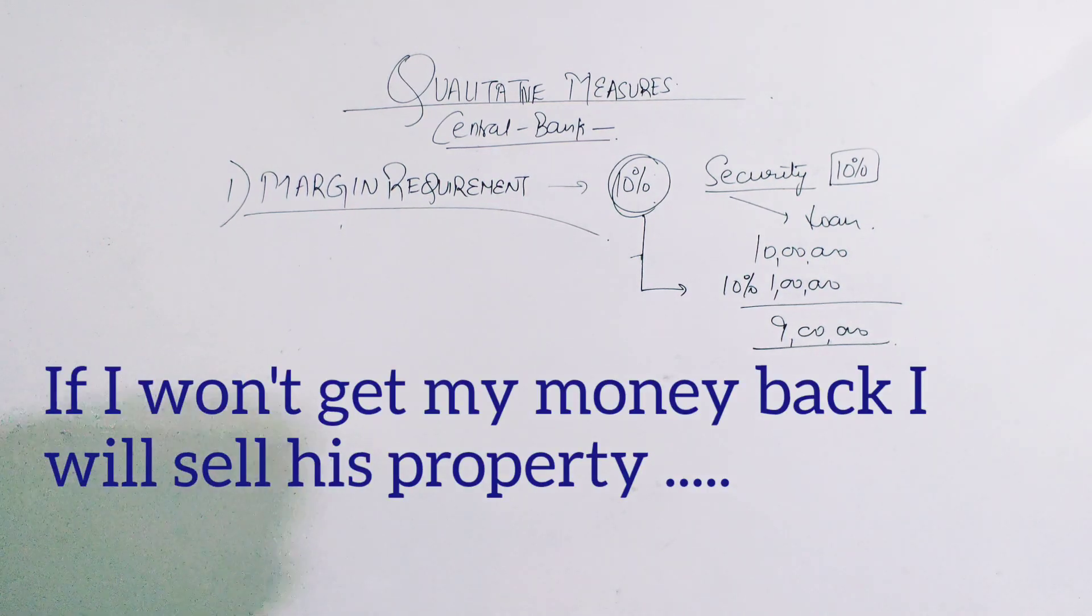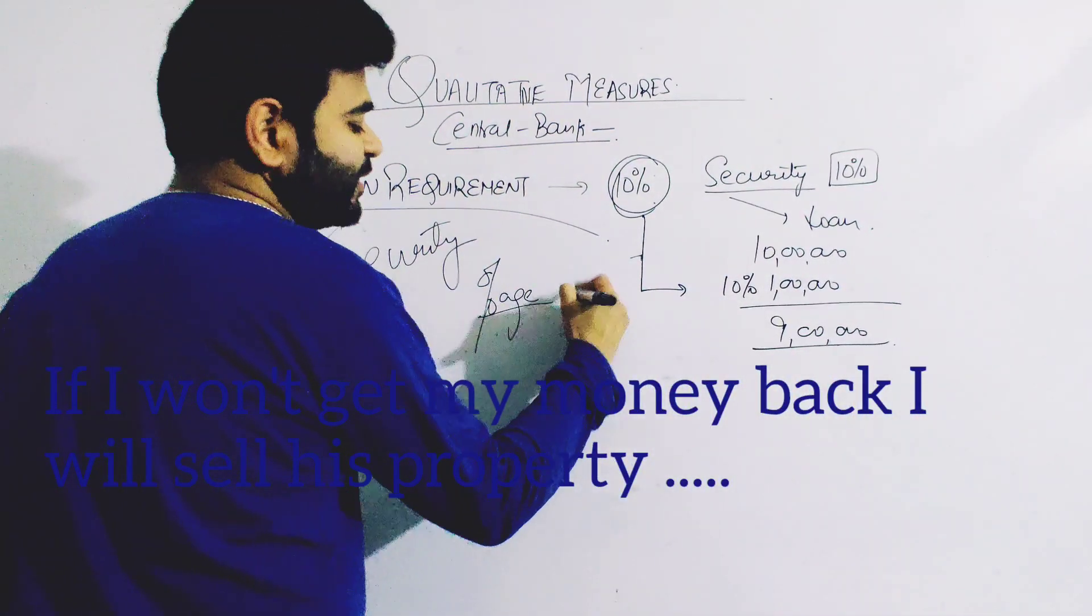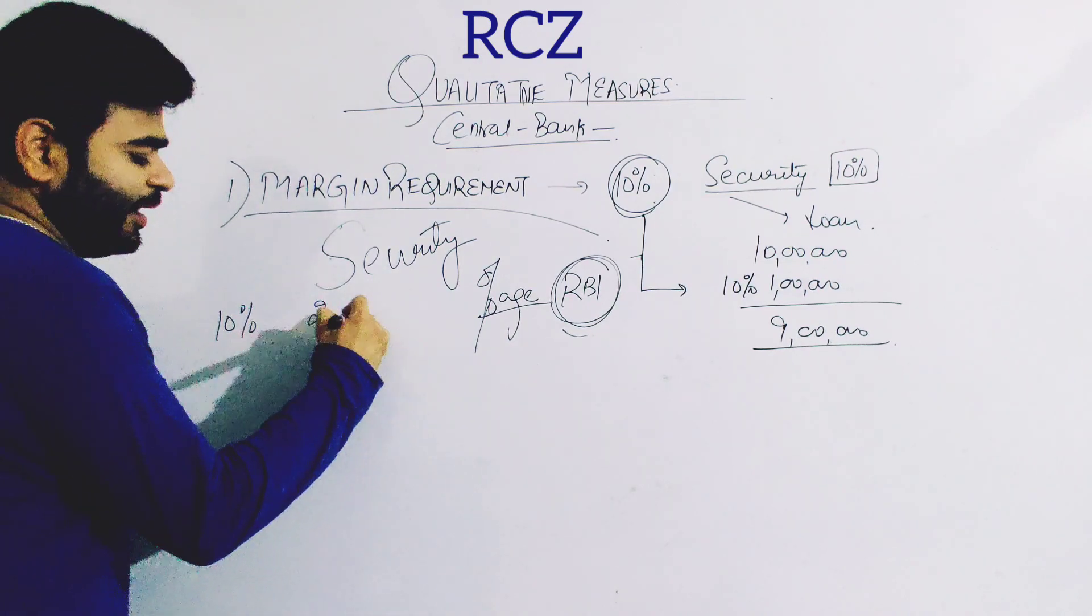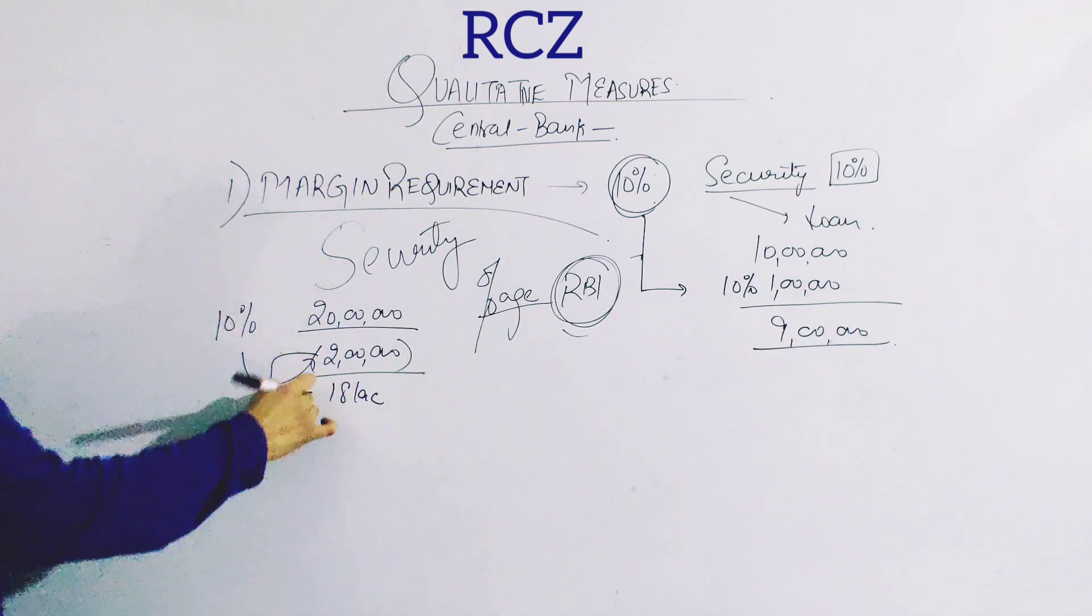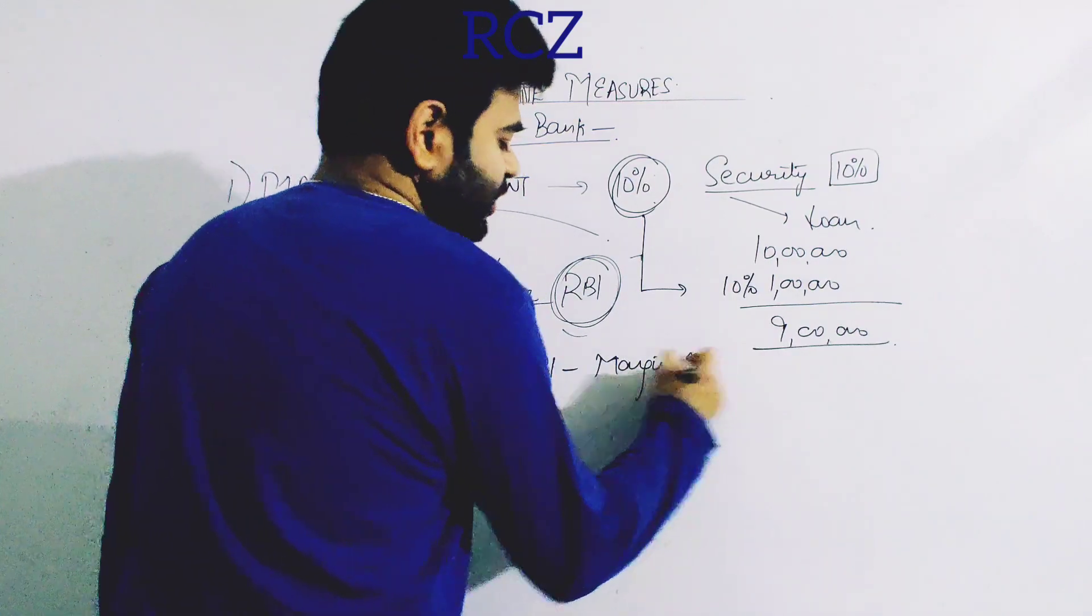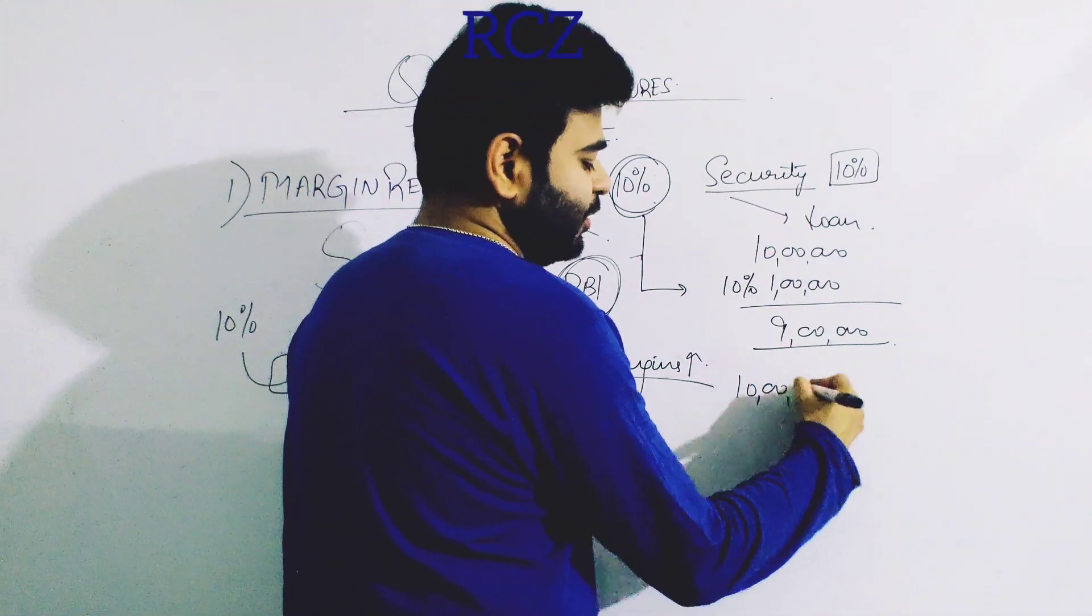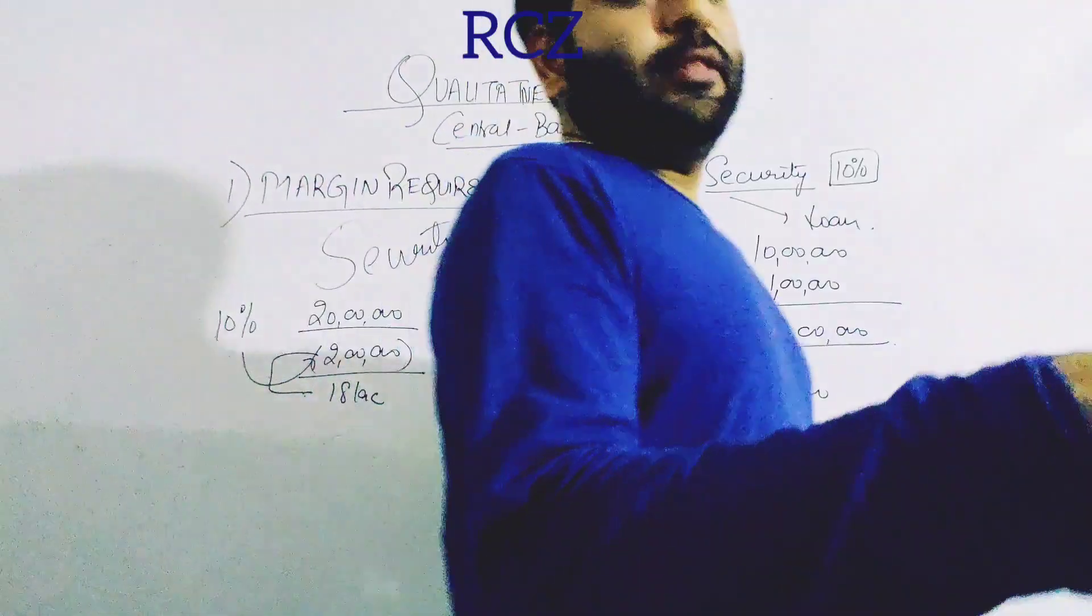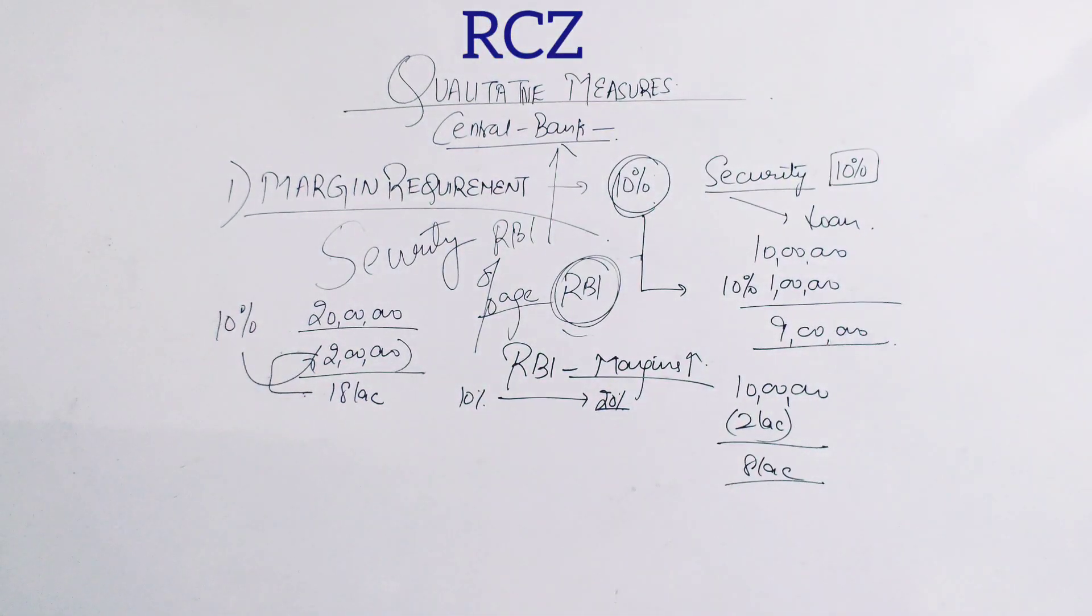If security value is 10 lakh, suppose Manish has an asset worth 10 lakh and I have margin of 10%, I can give him 9 lakh because I have to maintain 1 lakh margin. If RBI increases margin from 10% to 20%, then for 10 lakh security I keep 2 lakh with me and give only 8 lakh loan. So during inflation RBI increases margins to shrink money supply in the market.